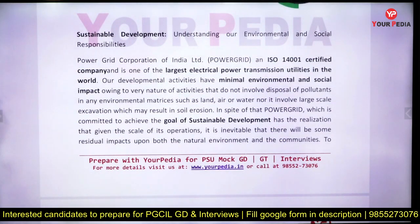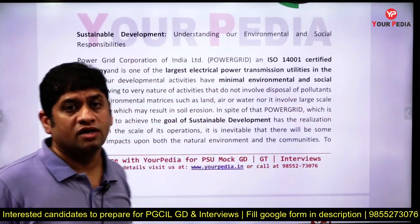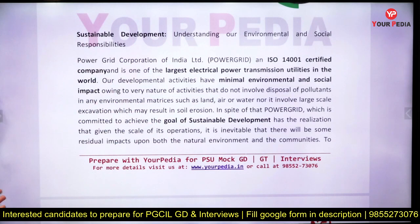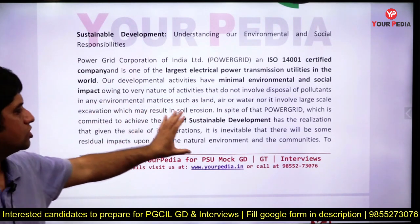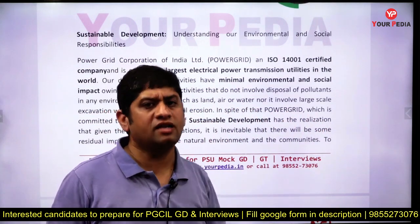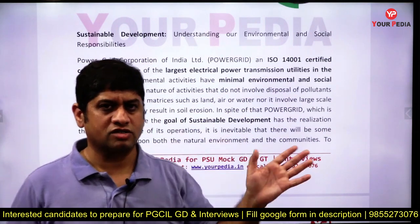You should know about sustainable development and what it means. Power Grid Corporation, which is ISO 14001 certified, is the largest electric power transmission utility in the world — not just in India. It aims to minimize environmental and social impact while meeting sustainable development goals. There are 17 sustainable development goals; terminologies like global warming, environmental protection are important.